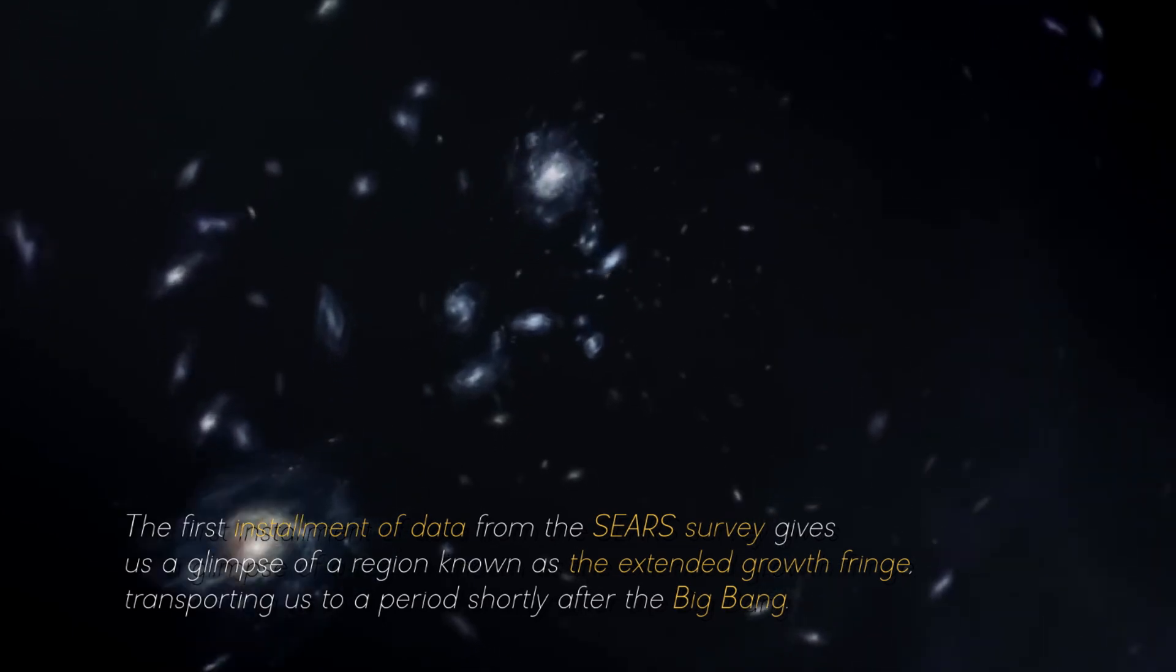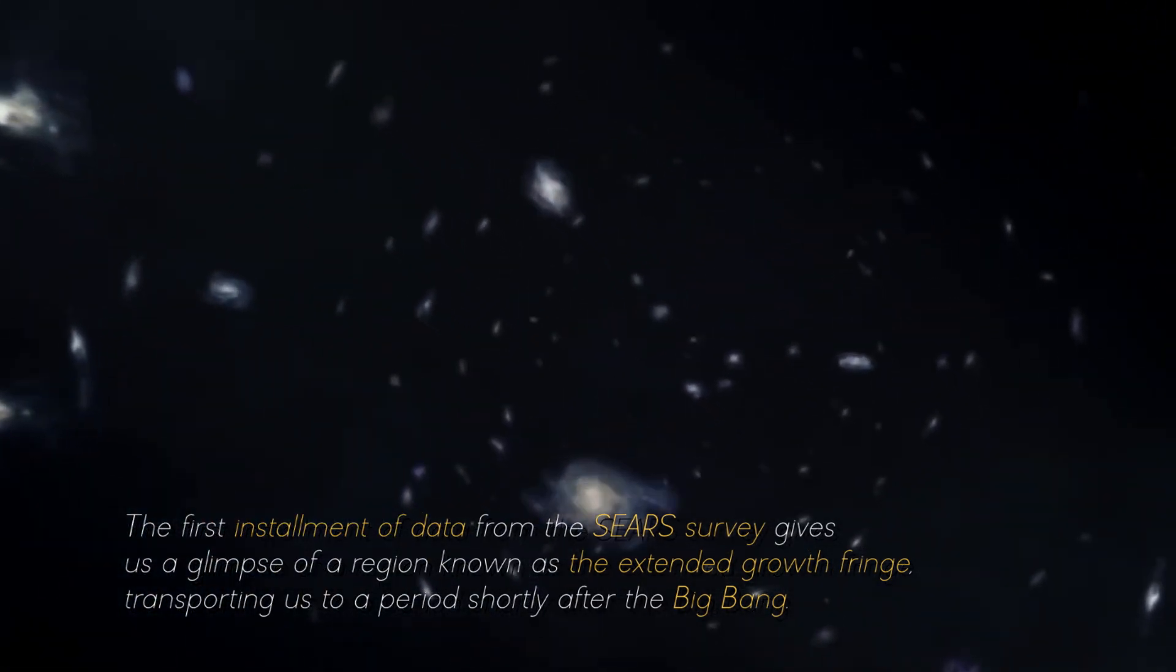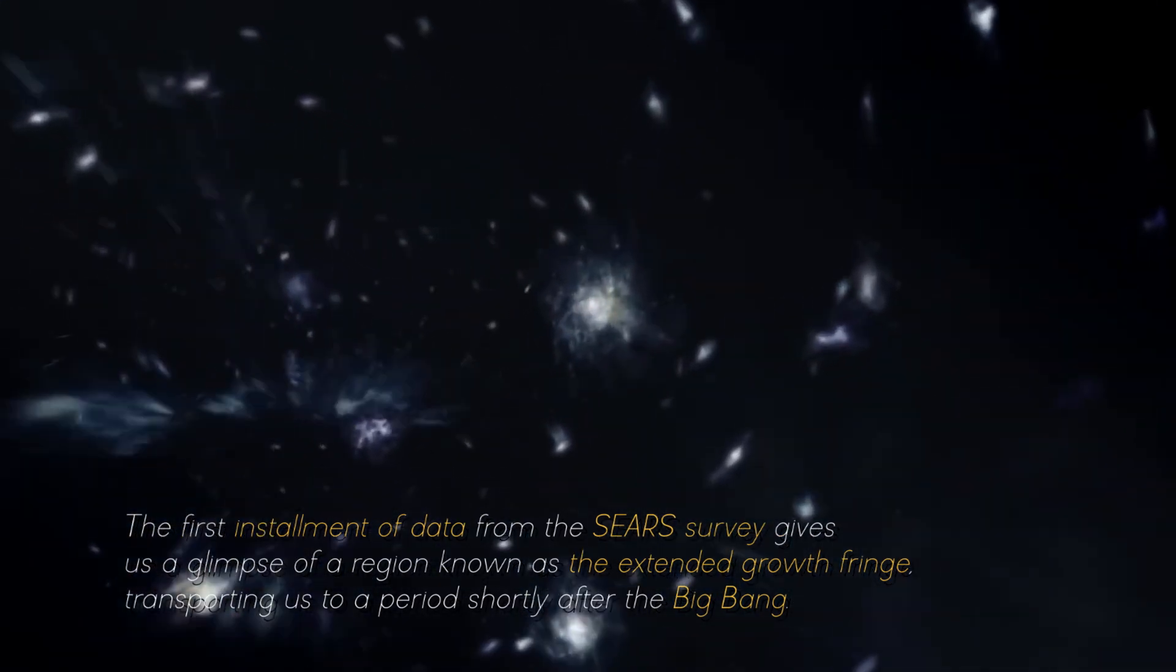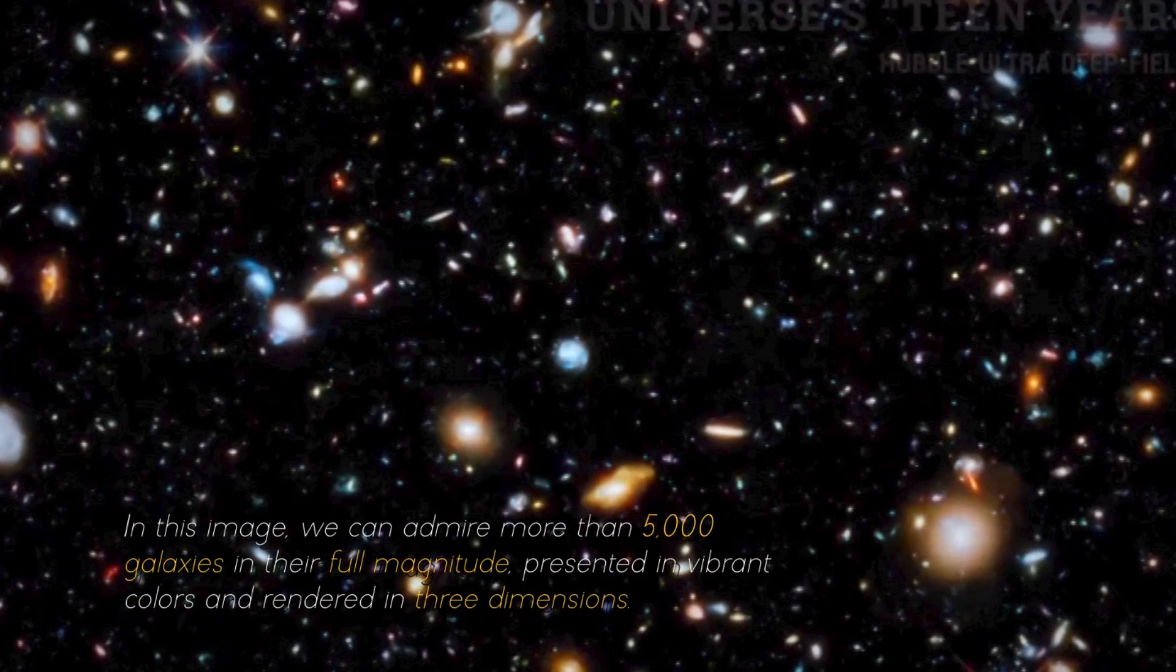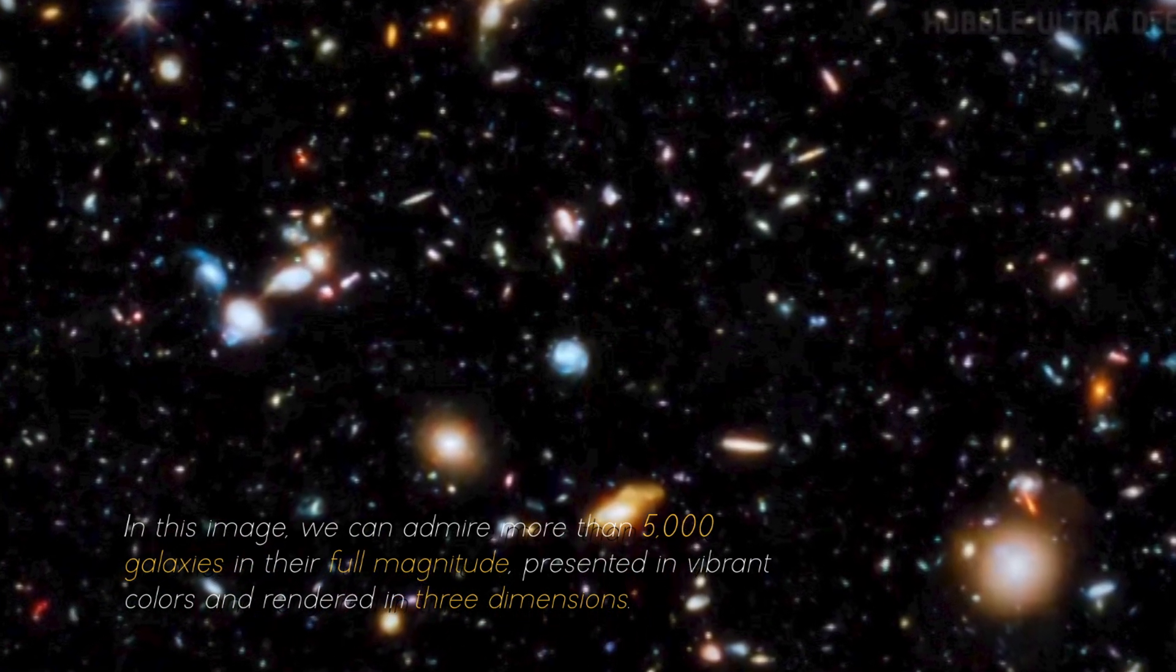The first installment of data from the CEERS Survey gives us a glimpse of a region known as the Extended Groth Strip, transporting us to a period shortly after the Big Bang. In this image, we can admire more than 5,000 galaxies in their full magnitude, presented in vibrant colors and rendered in three dimensions.